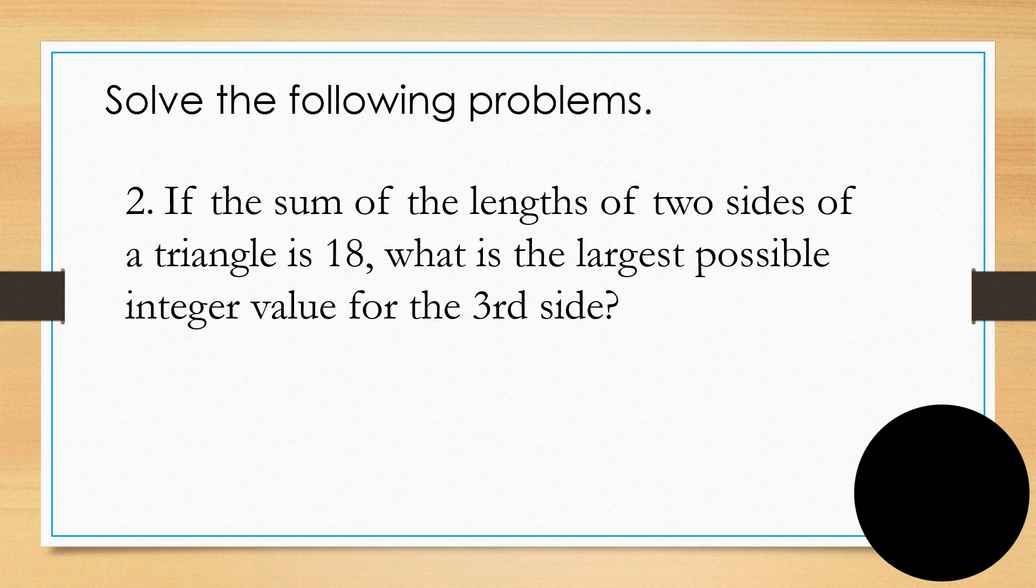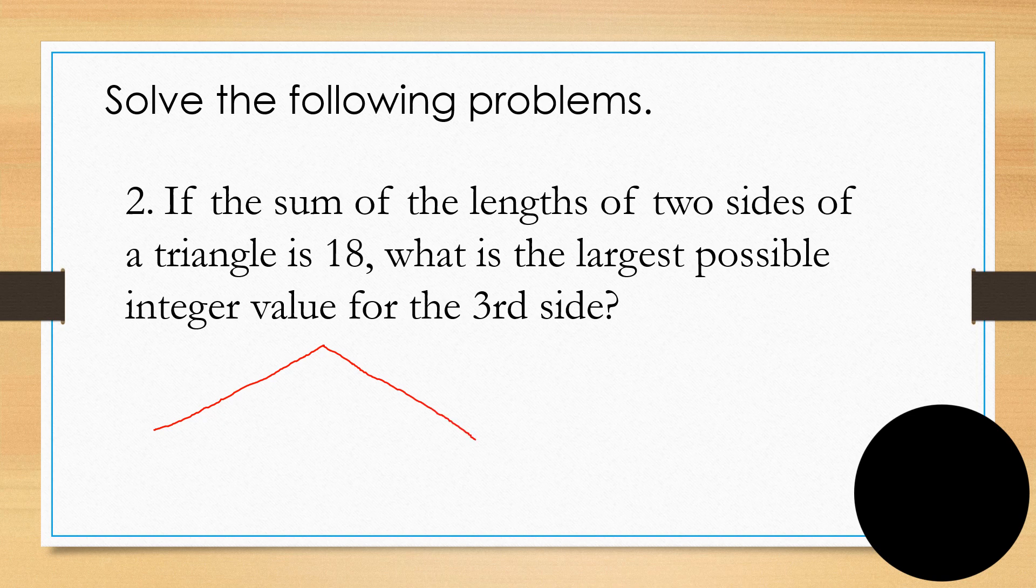Now, if the sum of the two sides of the triangle is 18, what is the largest possible integer value of the third side? So that means, if their sum is 18, it could be 9, 9. So that's probably 9, 9, and you need just to measure that third side in order to get the answer here. So you just measure this third side in order to get the answer here.